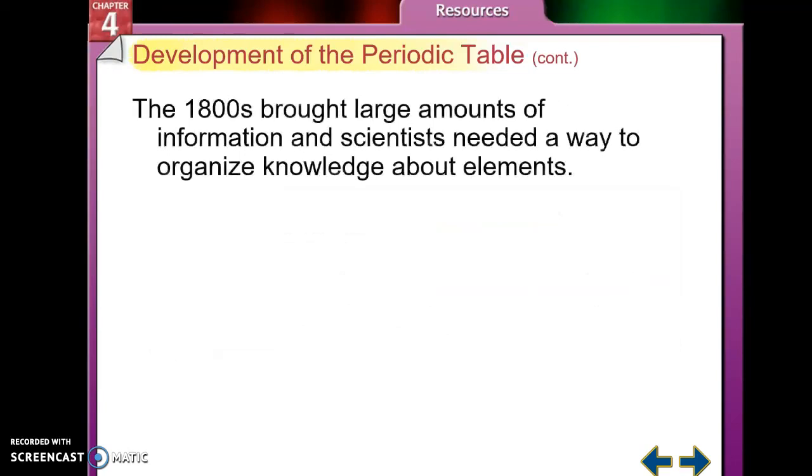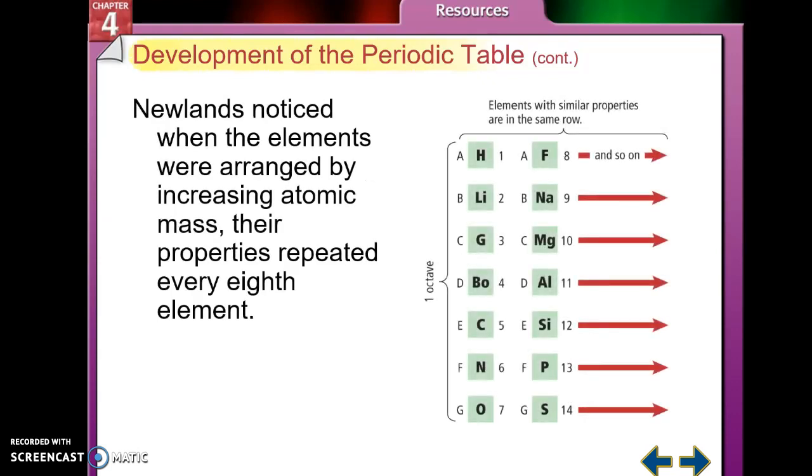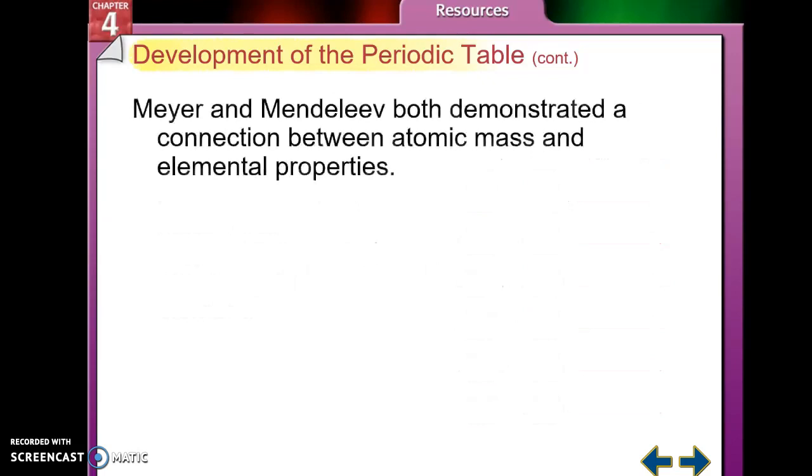In the 1800s, there was a lot of information that started cropping up due to the Industrial Revolution and bigger investigative techniques, and so scientists needed a way to organize knowledge about elements. There was a dude named John Newlands, and he proposed an arrangement where elements were ordered by increasing atomic mass. Newlands arranged things based on increasing atomic mass, so that's the protons plus neutrons. One of the things he noticed is that when the elements were arranged by increasing atomic mass, their properties were repeated every eighth element. This is called the law of octaves. Remember, an octave has eight music notes in it.